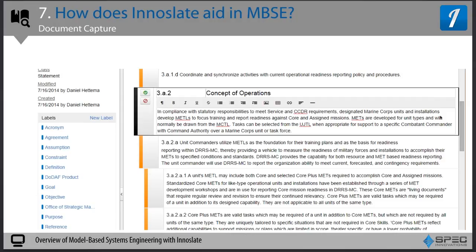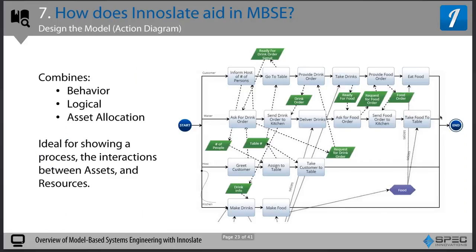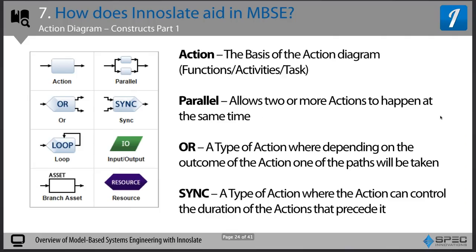How does Innoslate aid in model-based systems engineering? The first thing is document capture — there's a requirements view where you can bring in your initiating requirements and other documents, model them, and do traceability from there. Innoslate also allows you to build the model in the action diagram, which combines behavior, process, and physical models into one single view, ideal for showing a process and the interactions between assets and resources.